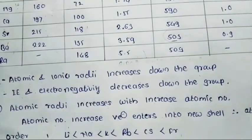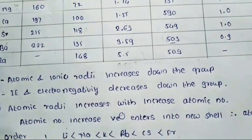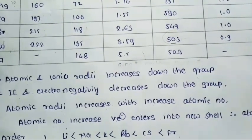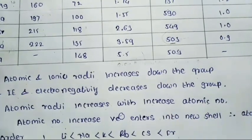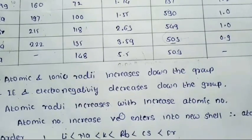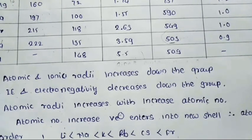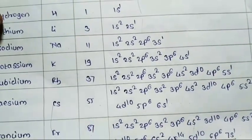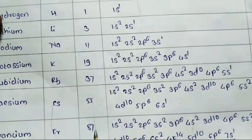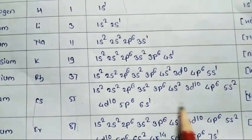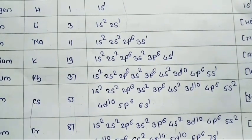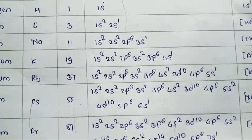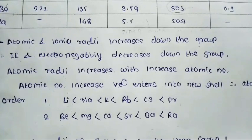The atomic radius increases with increasing atomic number. As atomic number increases, the valence electron enters a new shell, so atomic radius increases. For example, cesium has atomic number 55 and francium has 87. As atomic number increases from 55 to 87, electrons enter a new shell, so the new shell increases and atomic radius also increases. The order in group 1: Li < Na < K < Rb < Cs < Fr. Similarly in group 2: Be < Mg < Ca < Sr < Ba < Ra.